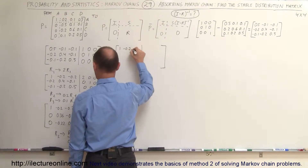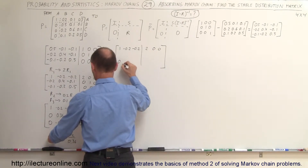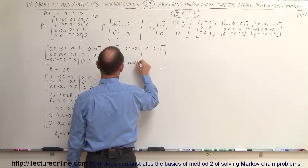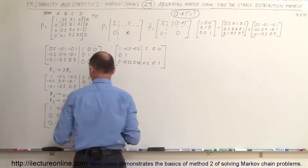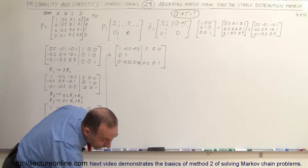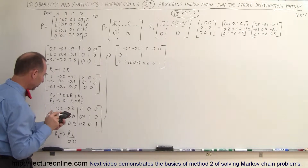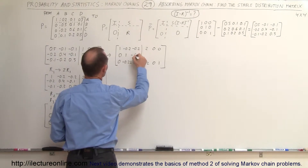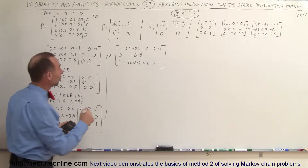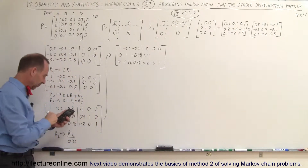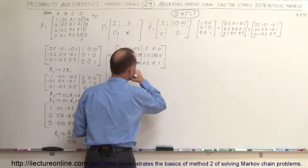Row 1 stays: 1, minus 0.2, minus 0.2, 2, 0, 0. Row 3 stays: 0, minus 0.22, 0.48, 0.2, 0, 1. Row 2 becomes: 0, 1, and the pivot is 1. Then minus 0.14 divided by 0.36 is minus 0.39. Then 0.4 divided by 0.36 is 1.11. Then 1 divided by 0.36 is 2.78, and this remains 0. There's our next matrix.